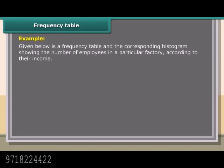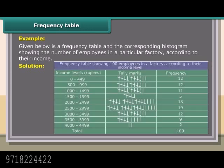Example: Given below is a frequency table and the corresponding histogram showing the number of employees in a particular factory according to their income. Solution: Frequency table showing 100 employees in a factory according to their income level.